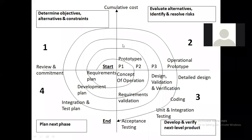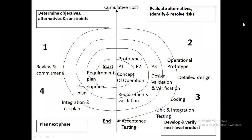In the spiral model diagram, there are four quadrants. In the first quadrant, we always highlight the objectives of the software, the various alternative techniques we can use to develop it, and the major constraints on the basis of which we will develop the software. We then evaluate the alternatives, and the evaluation is done based on risk factors.